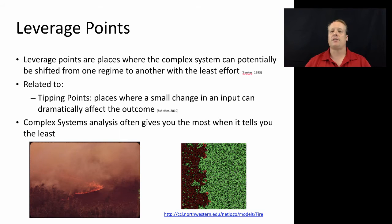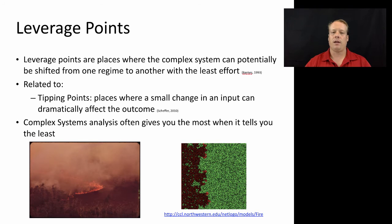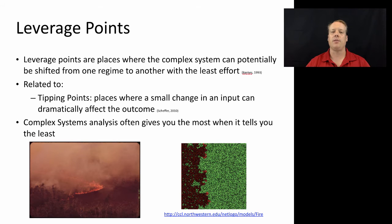In the FHIR model, we saw this when we modified the density of trees in the system by just a little bit. We went from a system where the fire died out really easily to a system where it spread throughout the entire forest. That's also related to the notion of tipping points, which we talked about in the segregation model — places where a small change in an input can dramatically affect the outcome. In the tipping point model, it was a small change in the diversity of a neighborhood that dramatically affected the segregation of that neighborhood.